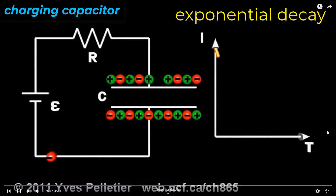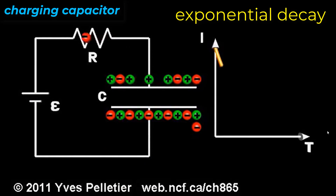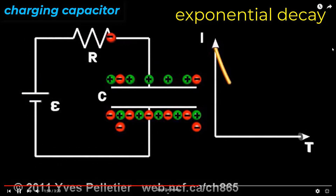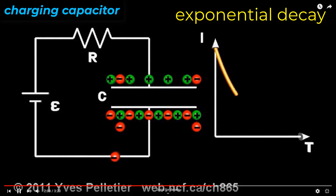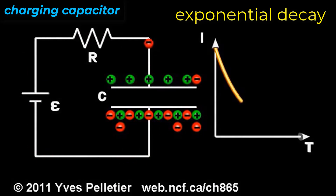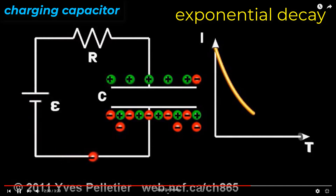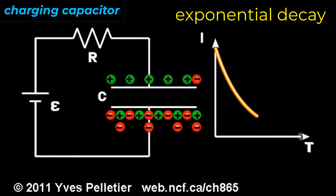Let's look at the same thing — a capacitor charging — but now we're looking at a graph of current versus time. At first, it's free and easy and wide open; the current flows at a good rate because there's no mutual repulsion to deal with. But as time progresses and the plate fills up, mutual repulsion gets in the way and the current starts to really slow down, giving us this classic exponential decay curve. So the charge buildup is growing logarithmically and the current is diminishing exponentially.